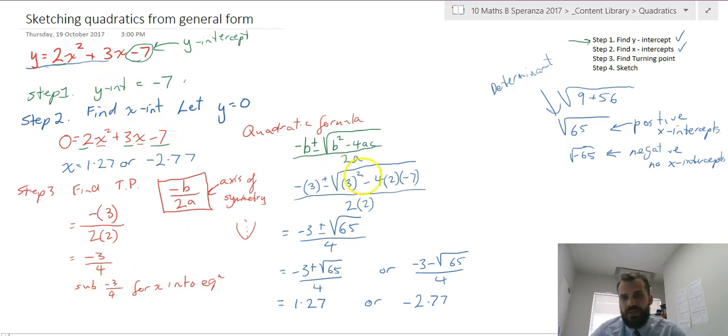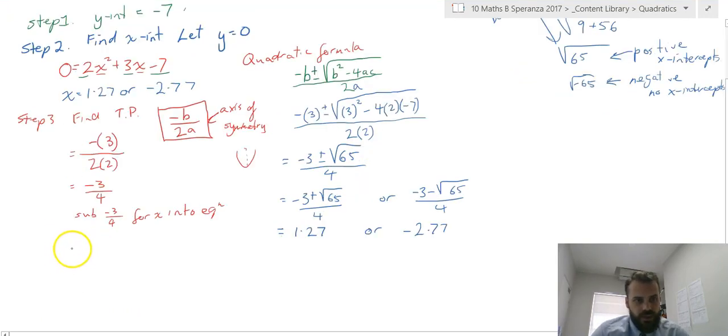Now that I know my axis of symmetry, I can sub negative 3 on 4 for x into the equation. So wherever I see x, I just sub in negative 3 on 4. And when you sub it in, make sure you sub it in brackets.